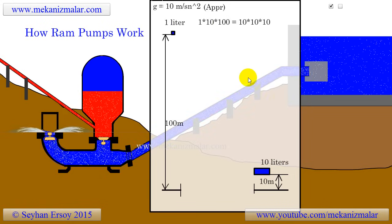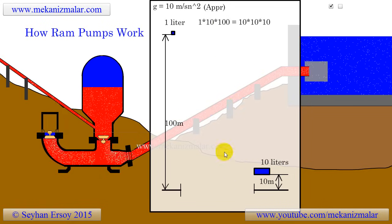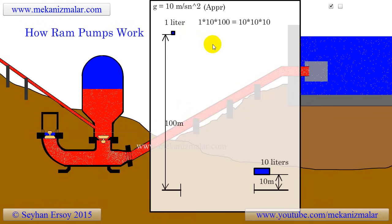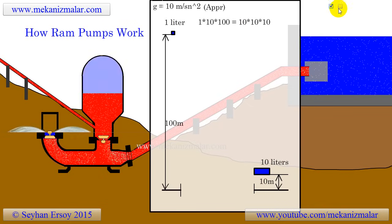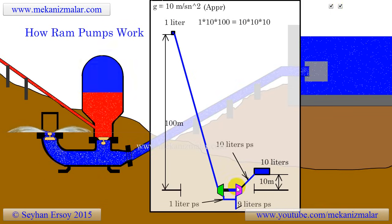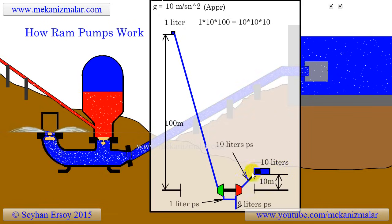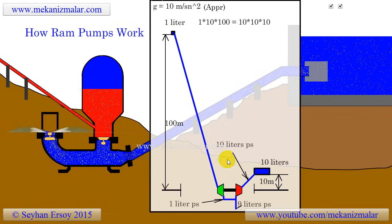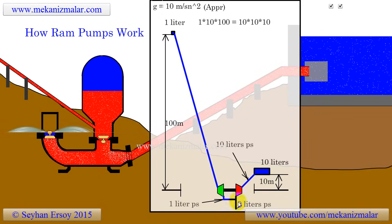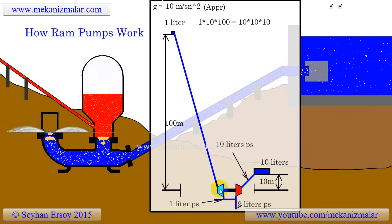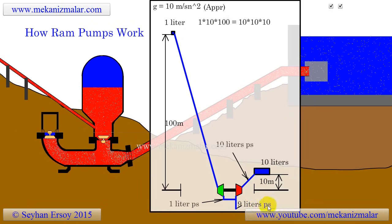Now imagine that we do not know anything about ram pumps and want to pump water to higher elevation using nothing but the power of water itself. This would be easy if we had a water turbine and a conventional pump. As you can see in the second drawing, we can take the large volume of water from the low water head and feed the turbine with this water. A small portion of this water is being fed to the pump, while we dispose of a large quantity of the water to the environment.